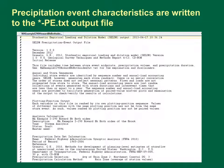Precipitation event characteristics are written to the "-pe.txt" output file in the analysis directory under the FHWA-SELDM folder on the root drive of the computer. This file contains a list of the precipitation stations and statistics in tab-delimited format. Storm event characteristics, including the interval between storm event midpoints, storm duration in hours, and storm event volume in inches, are also included. Individual storm events are identified by sequence number and annual load accounting years. SELDM generates each storm randomly with no serial correlation, so the order does not reflect seasonal patterns.